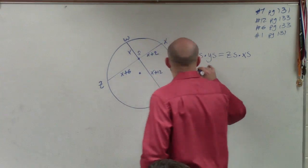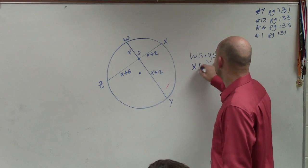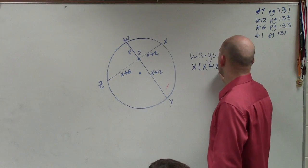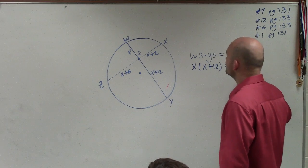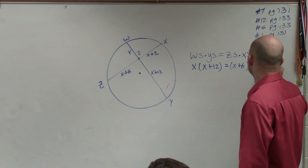WS is x, YS is x plus 12, equals ZS is x plus 6, times SX is x plus 2.